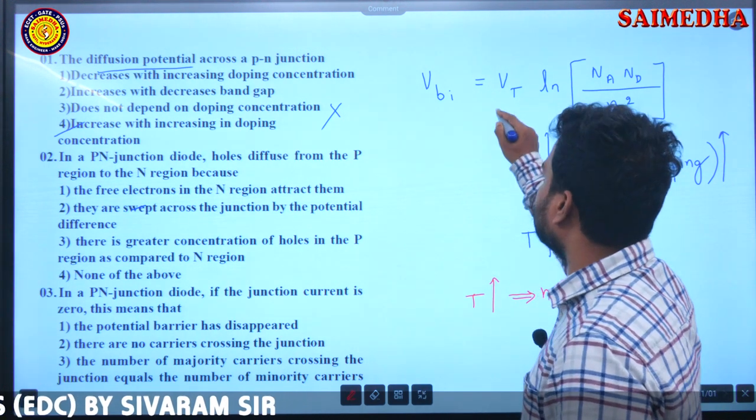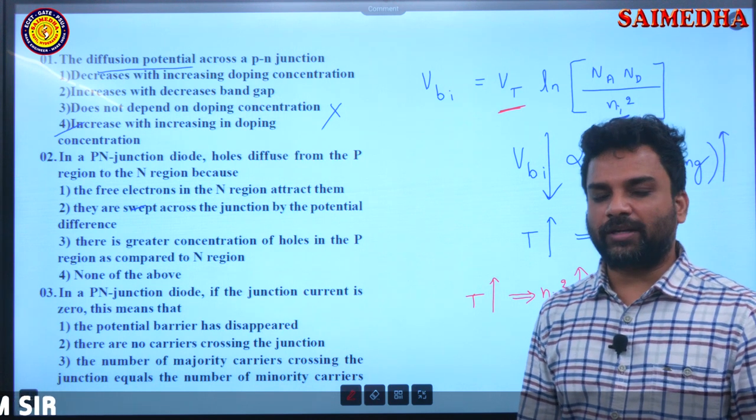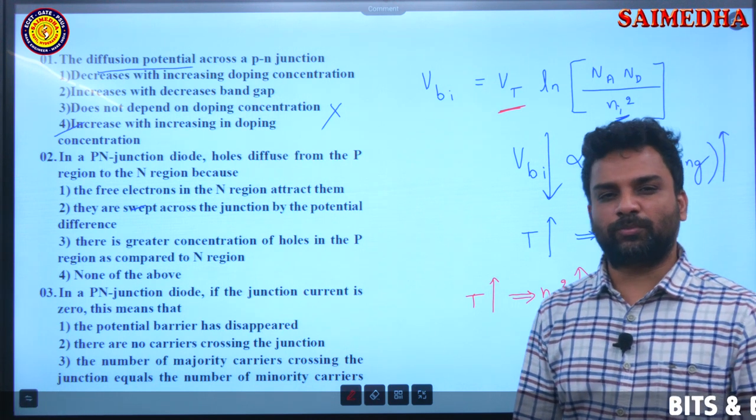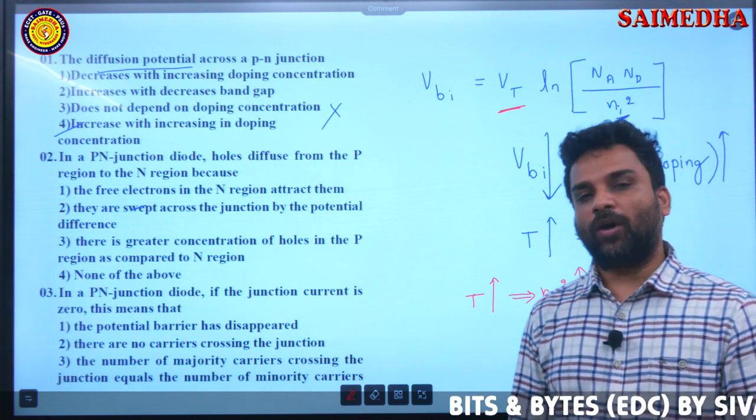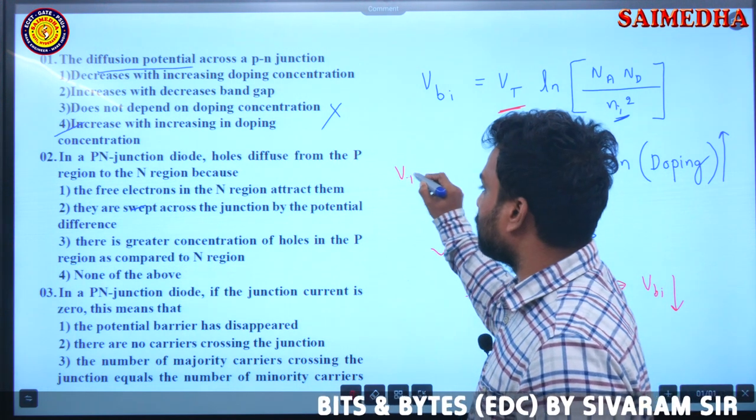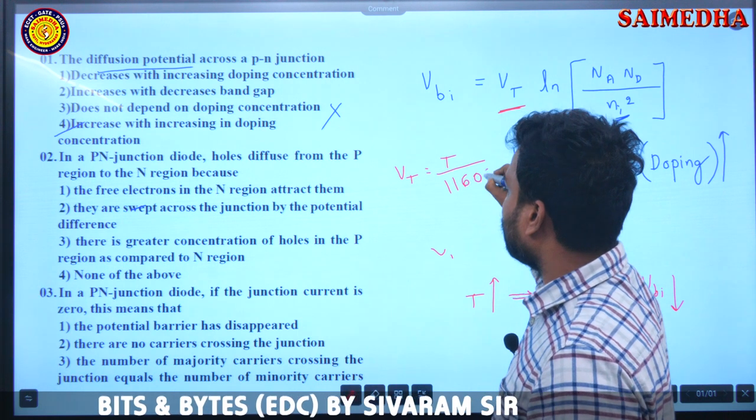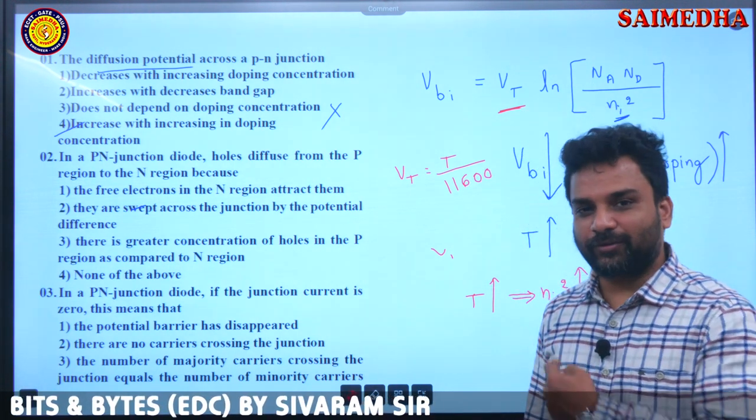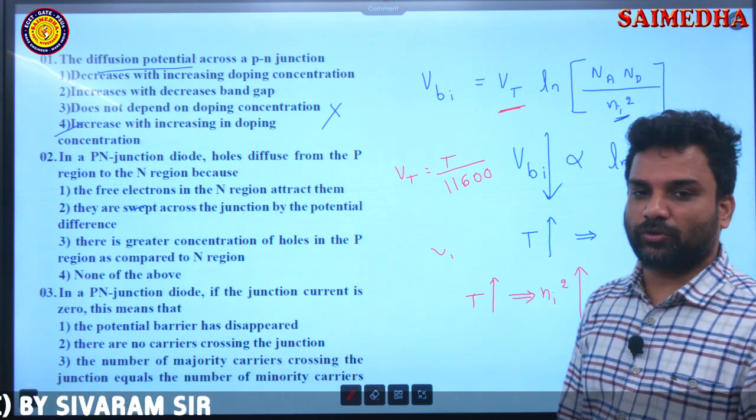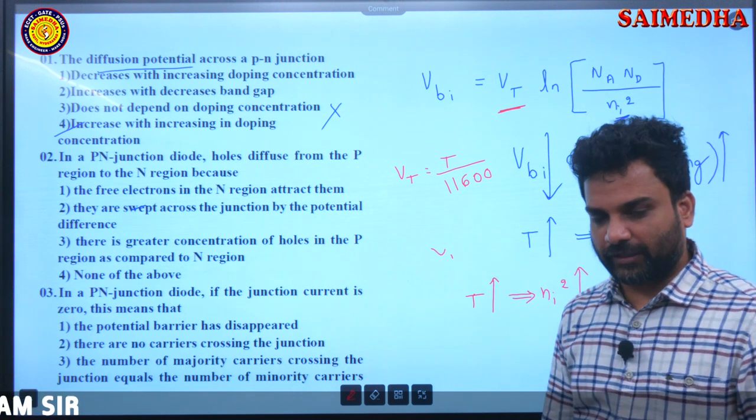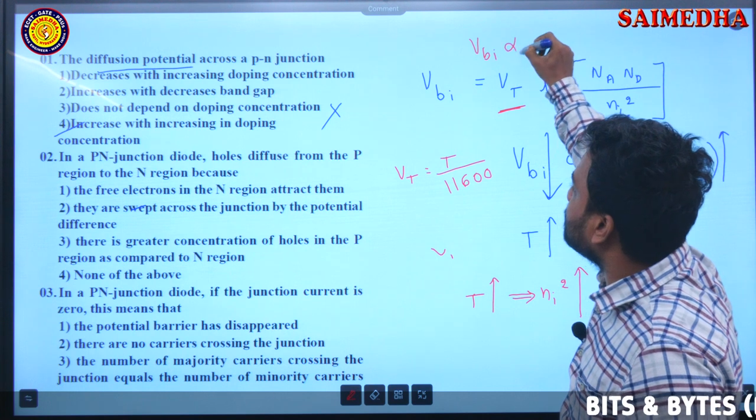You can have a doubt, sir, this is VT or not? There is VT. What is VT sir? Volt equivalent temperature. Einstein relationship is equal to T by 11600. So T by 11600.